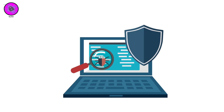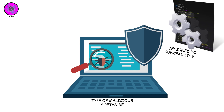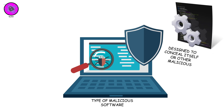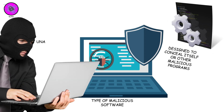Rootkit. A rootkit is a type of malicious software designed to conceal itself or other malicious programs on a computer or system. It typically provides attackers with unauthorized access to the system, allowing them to carry out various malicious activities without being detected.